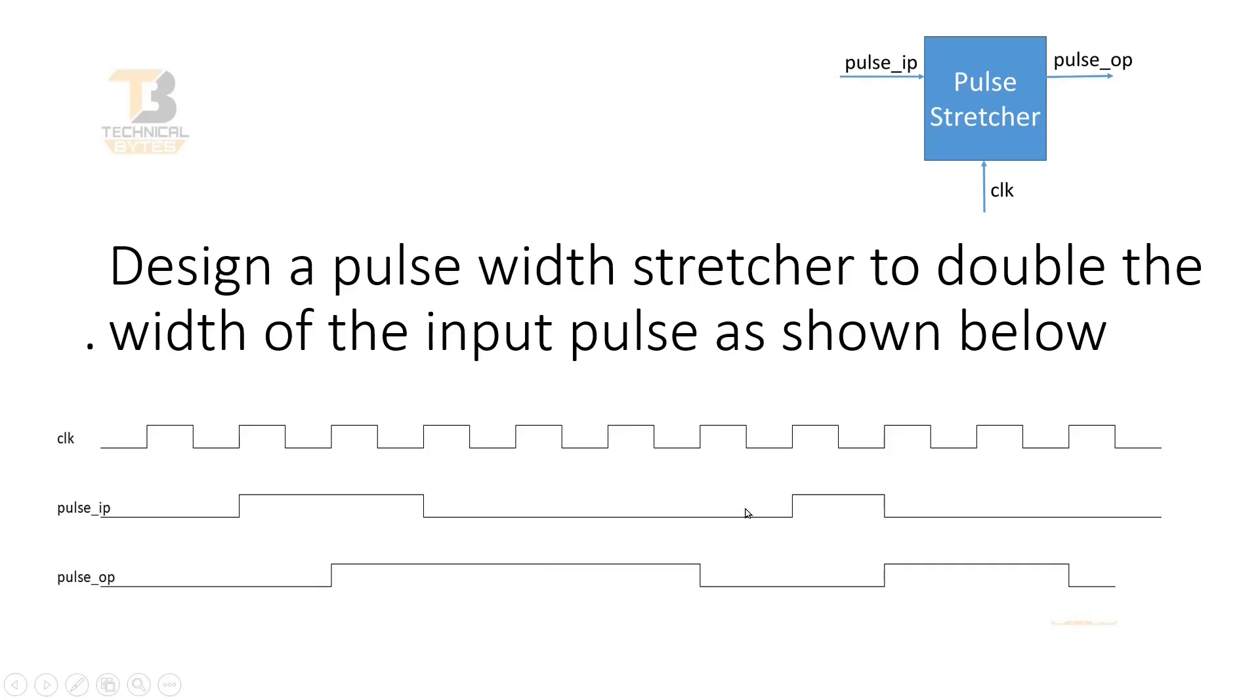And then again one Pulse appears at the Pulse Input which is of one clock cycle only. So, as per our Pulse Stretcher logic, the Pulse Stretcher logic will generate a Pulse of two clock cycles at the Pulse Output. So, this is our expected output.